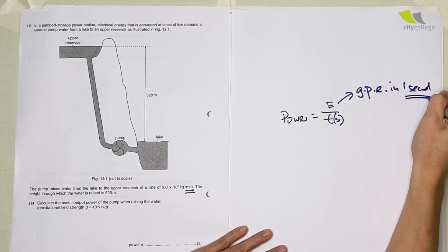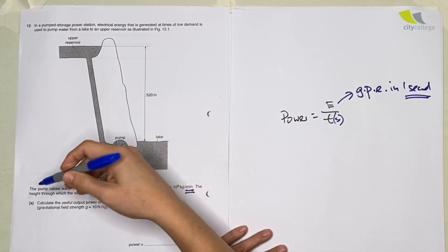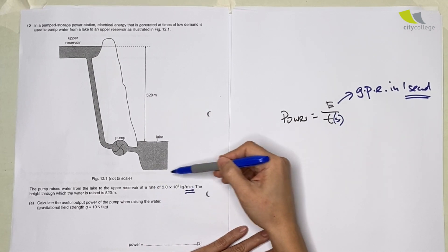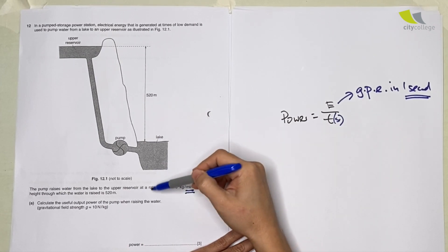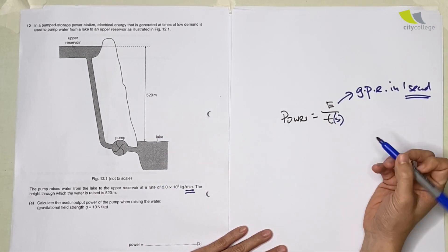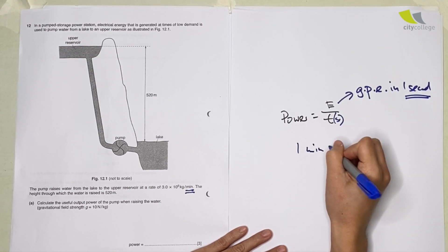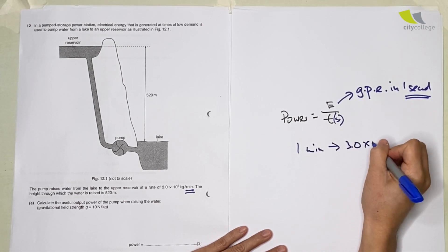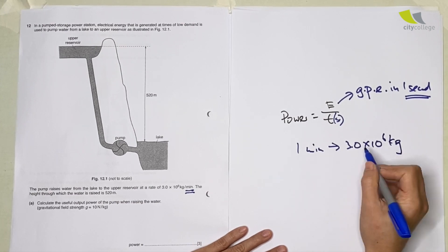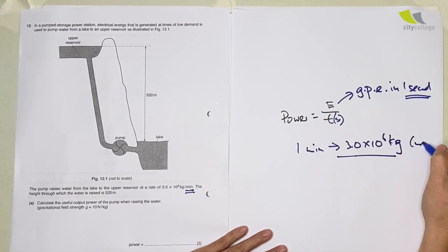They tell you the mass of the water that's happening in one minute. So one minute will give you 3.0 times 10 to the power 6 kilogram, which this is actually mass. So this is going to go inside our formula of mgh.